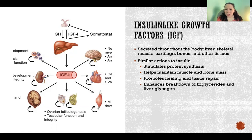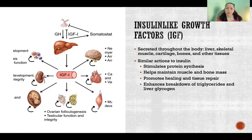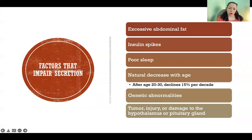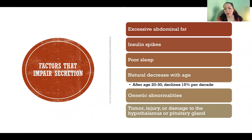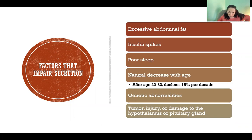We actually secrete more growth hormone — which stimulates IGFs — when our blood sugar is low, which is the opposite of when we secrete insulin. So factors that impair secretion: if somebody has low growth hormone, something on this list may be interfering with growth hormone secretion.